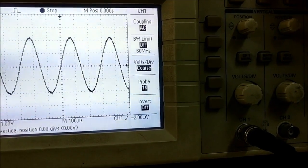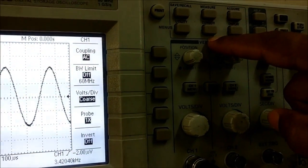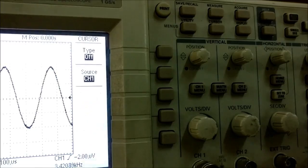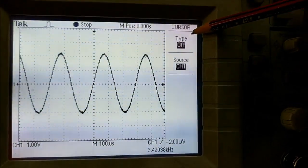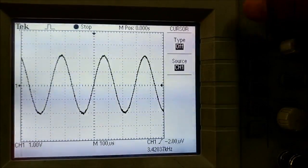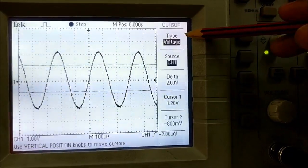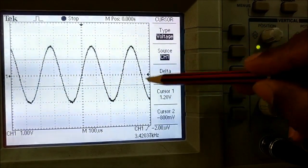Now we have to measure. For measurement, we press the cursor button below the measurement option. If we press cursor, it will show the type of cursor you want. I will select voltage.